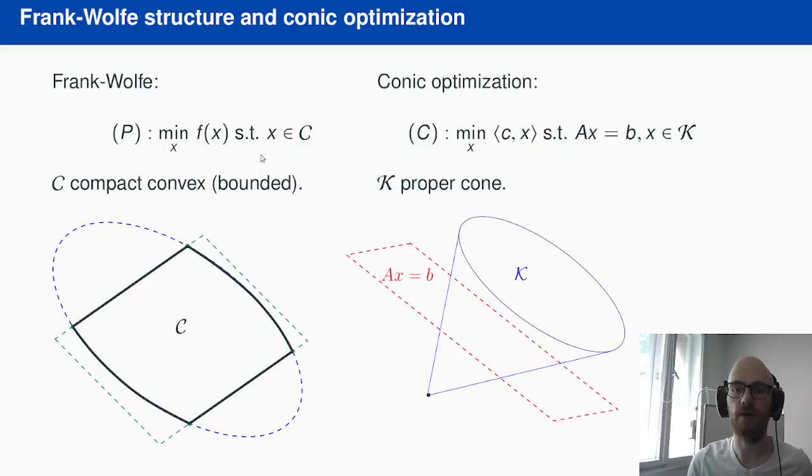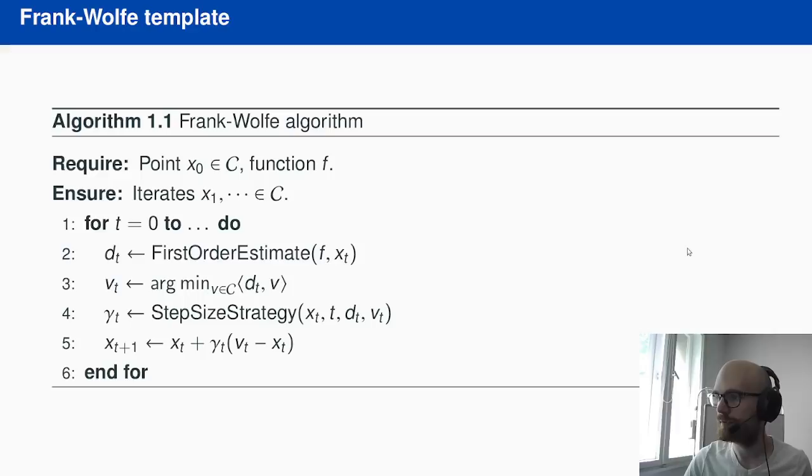The model we consider with Frank-Wolfe goes in the opposite direction from conic optimization where you would often optimize a linear function subject to affine constraints and variables in a cone. The cone is some unbounded set by nature so you optimize over the intersection with some affine subspace and a linear function. While here for Frank-Wolfe algorithms, we keep the non-linearities in the objective function. We don't need to pass them to constraints as with conic optimization. And we consider this set C that has to be easily linearly optimizable over. More specifically, we consider that C is compact and convex, unlike cones.